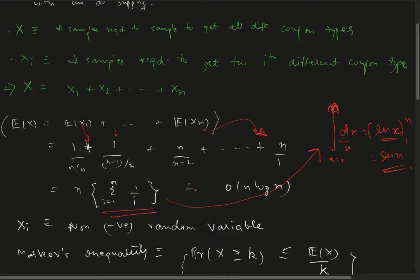The discrete summation 1 to n of 1/i is the discrete version of this integral, and obviously since this is discrete it will be less than ln(n), so we can say that this whole quantity is order of n log n.